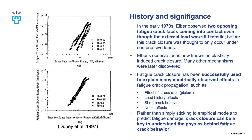About the history and significance of this phenomenon: it was discovered in the early 1970s when Elber observed two opposing crack surfaces coming into contact even though the external load was still tensile. Before this, crack closure was thought to only occur under compressive or zero loads. His observation is now known as plasticity induced crack closure, and many other mechanisms were later discovered. Fatigue crack closure is really significant because it has been successfully used to explain many empirically observed effects in fatigue crack propagation, such as the effect of stress ratio, load history effects, short crack behavior, and notch effects.